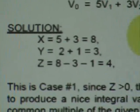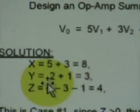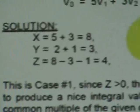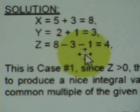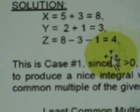The calculation of capital X is the sum of 5 and 3, which is 8. And Y is 2 plus 1, that is 3. And Z is 8 minus 3 minus 1, that is equal to 4. So that is case 1.